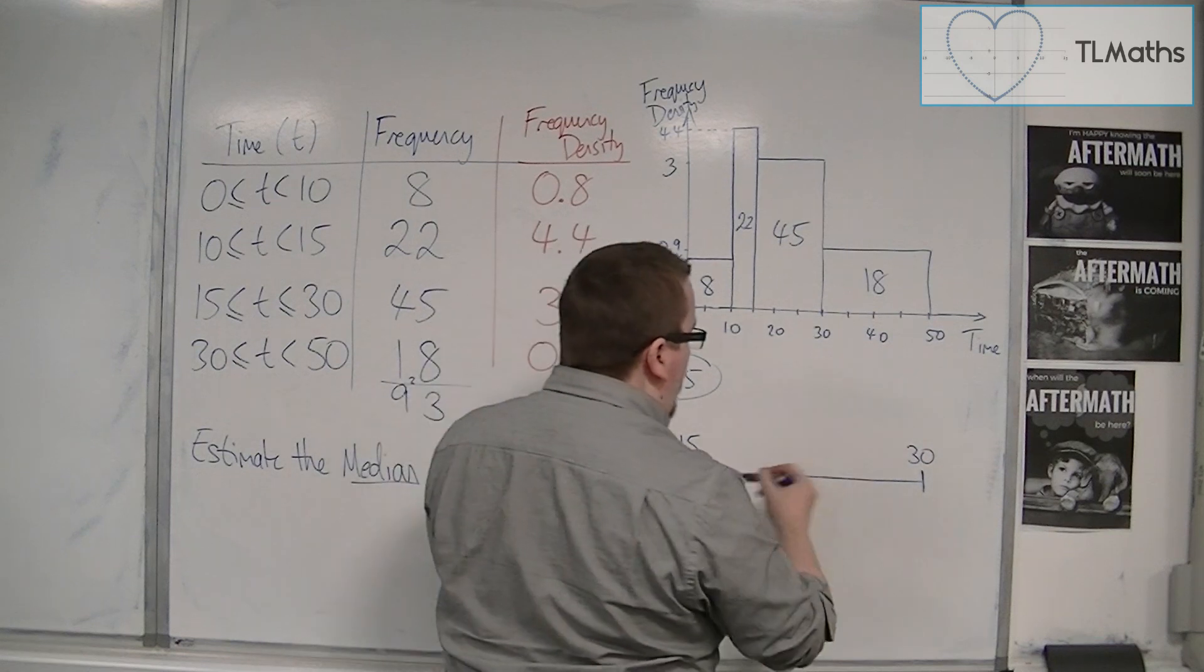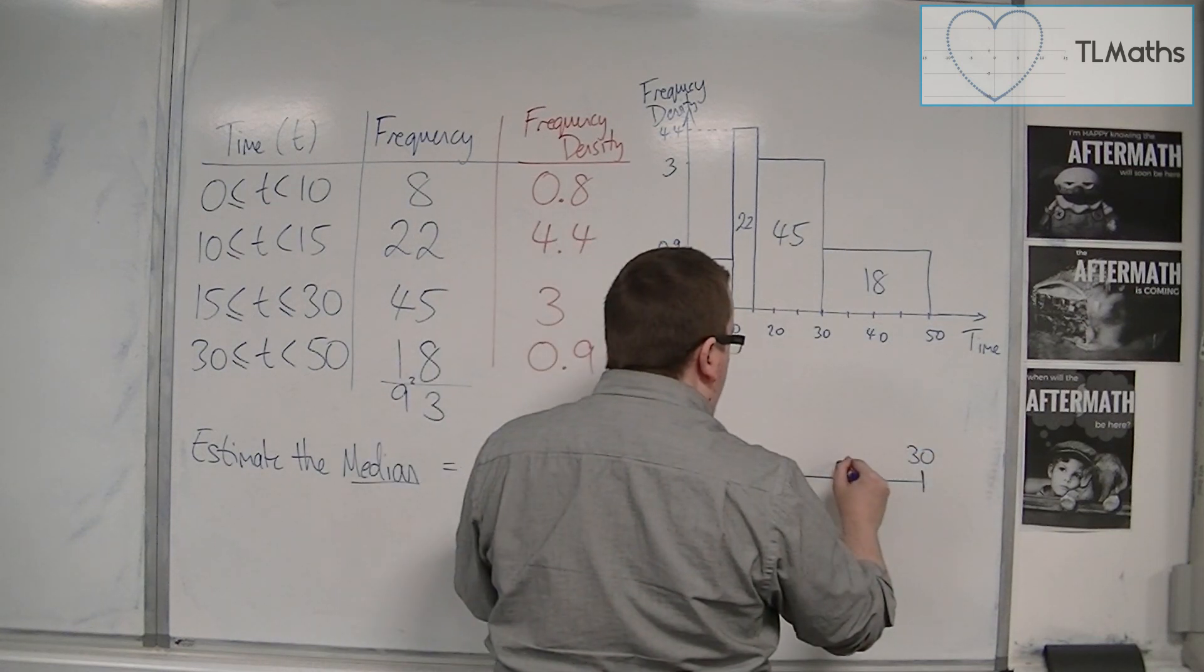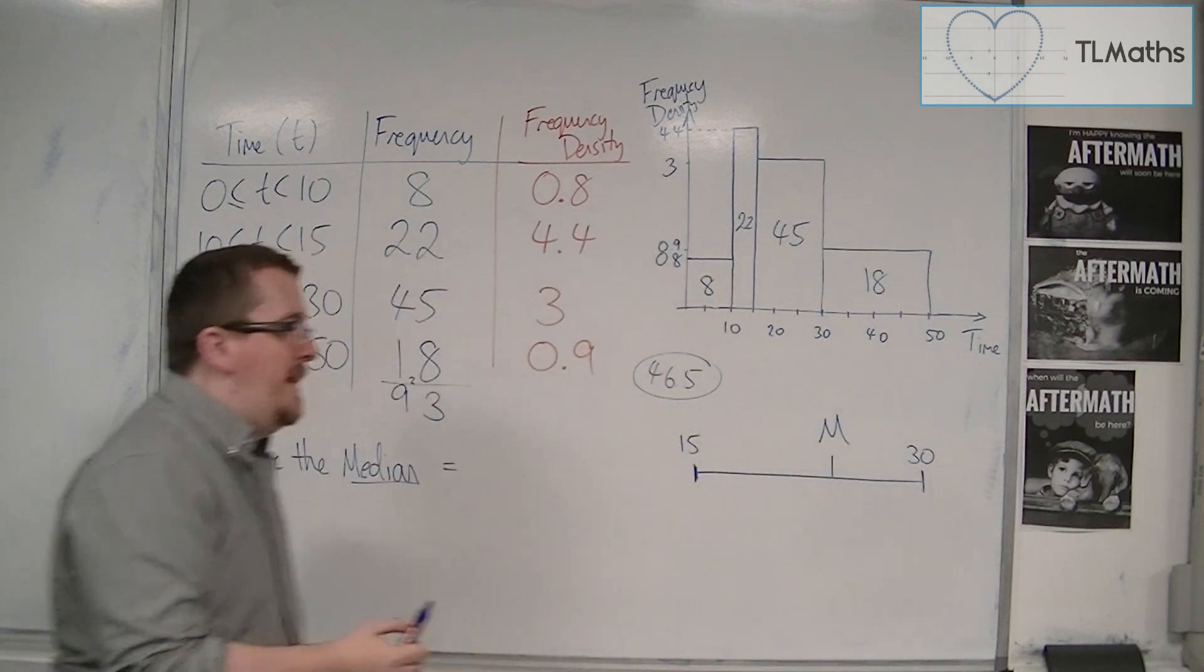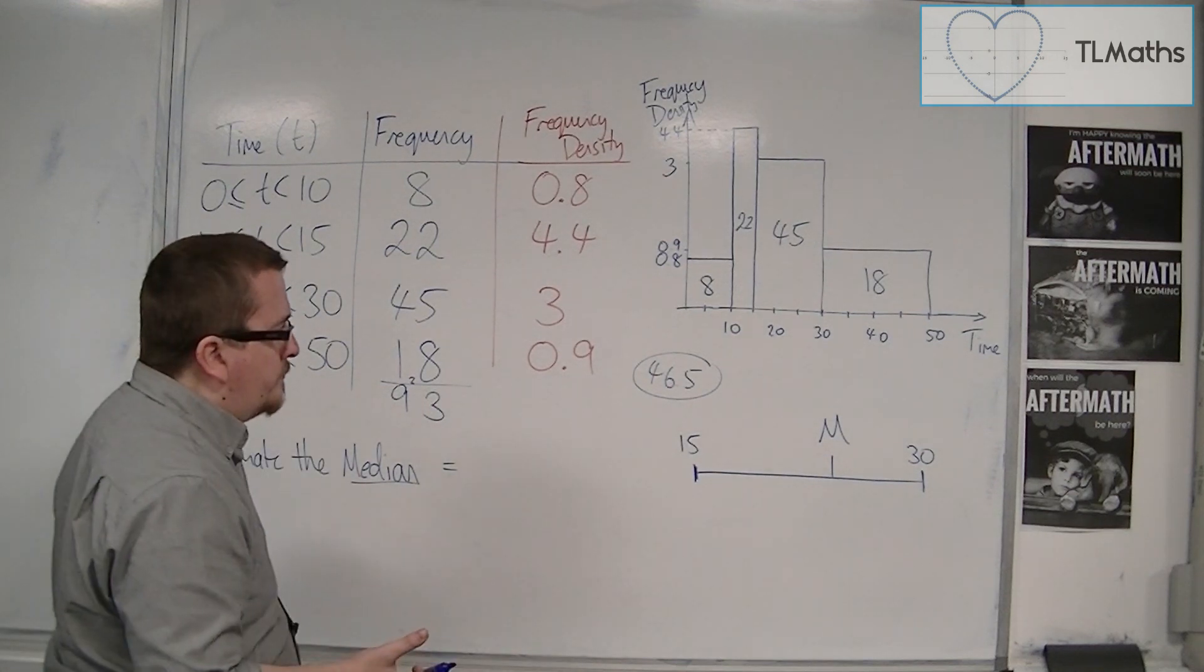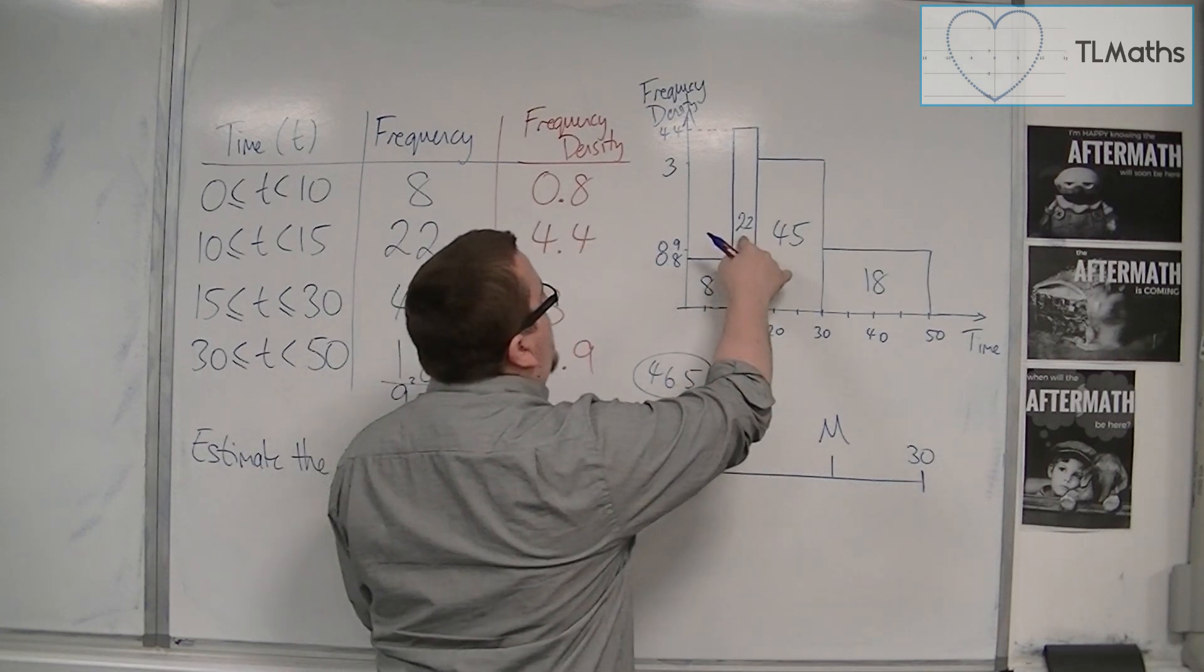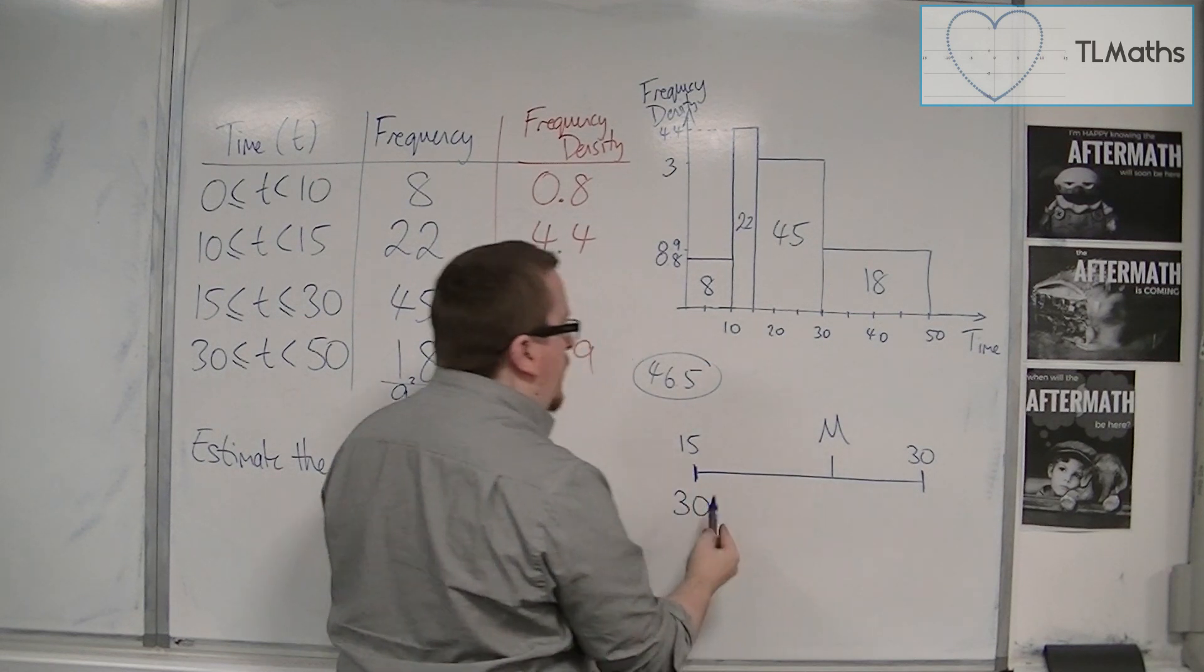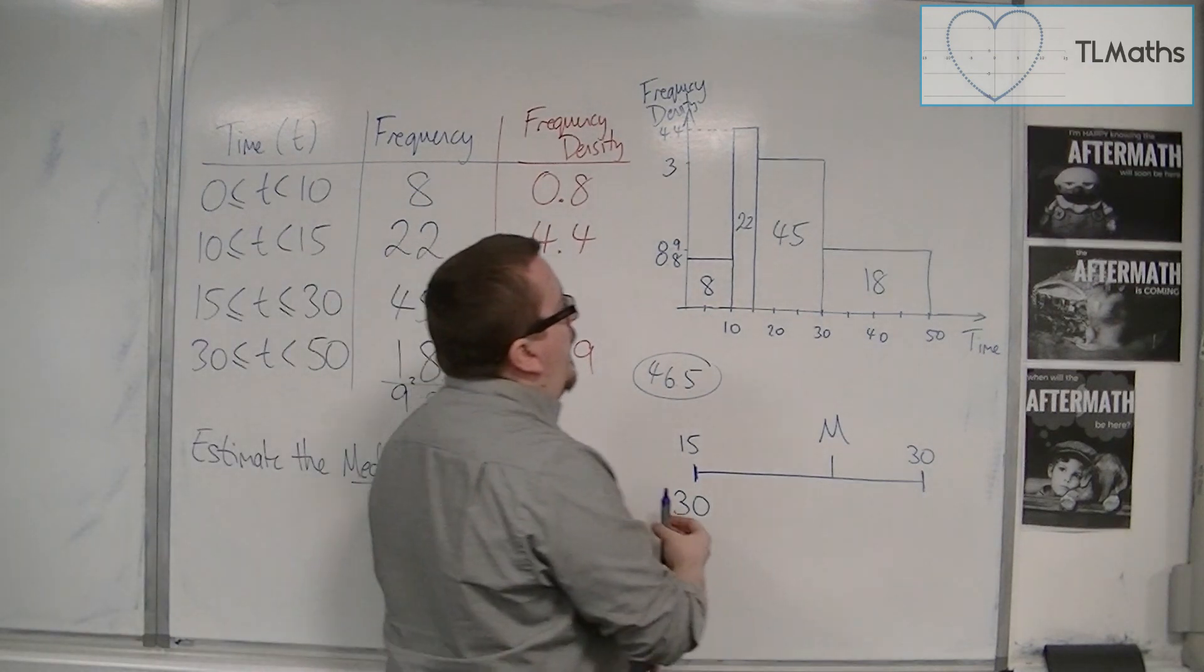And on the bottom of this. What I want to do is I want to represent this as, because effectively my median is going to be somewhere between this 15 and 30. So if I represent it with an M for median. It's going to be somewhere in this gap.